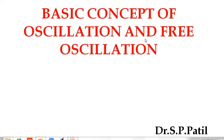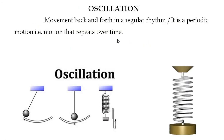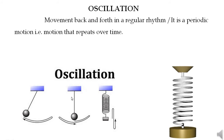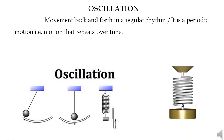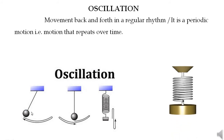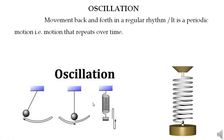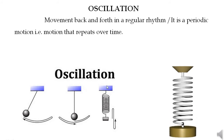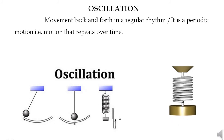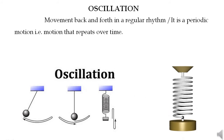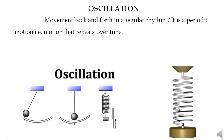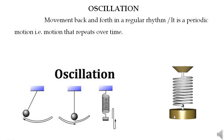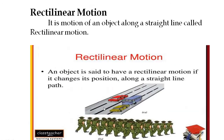Initially we talk about the definition of oscillation. It is movement back and forth in a regular rhythm, or it is a periodic motion — that is, motion that repeats over time. The schematic shows back-and-forth motion and up-and-down motion. An animation shows a spring oscillating up and down.